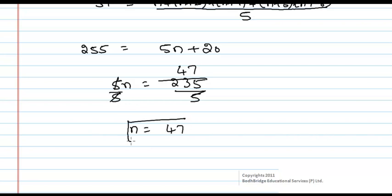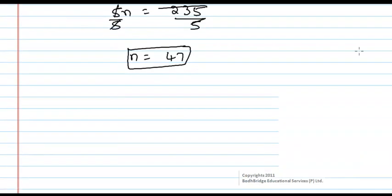This will be the lowest odd number. The highest odd number, or highest consecutive odd number among the 5, will be 47 plus 8. That will be 55.